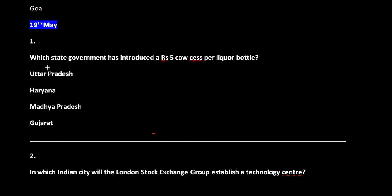Question 1: Which state government has implemented a ₹5 cause per liquor bottle? Options are Uttar Pradesh, Haryana, Madhya Pradesh, and Gujarat. The correct answer is option B, that is Haryana. Under the new excise policy, the government has a sales collection target and the same funds will be collected for welfare.